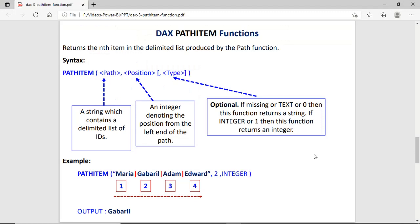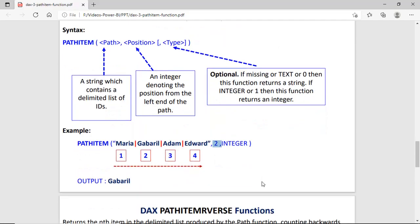Now we check PathItem. The PathItem function returns the item from a given position. In the syntax, PathItem takes the path, then a position number, and optionally a type such as integer or text. For example, with 'Maria | Gabriel | Adam | Edward', there are four items. If we want Gabriel, its position is 2 from the left, so the output is Gabriel.